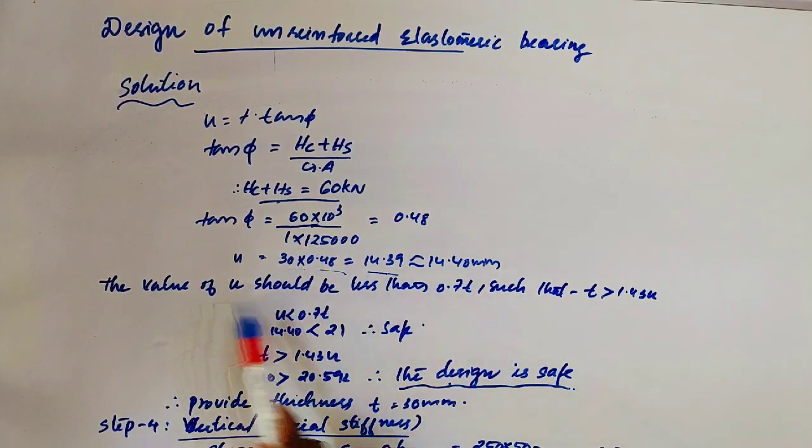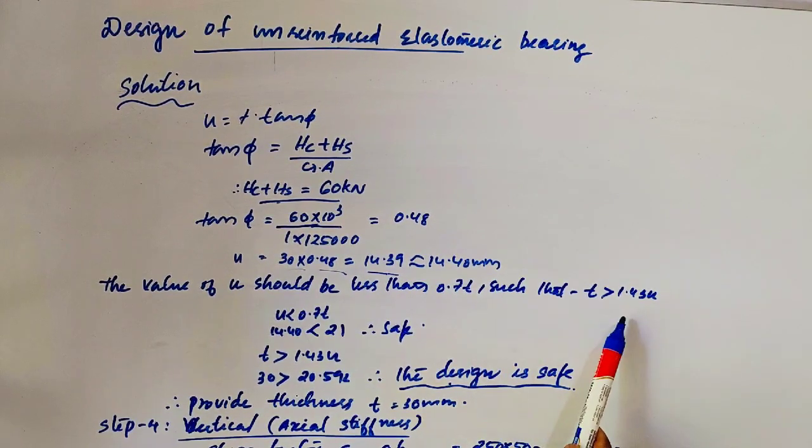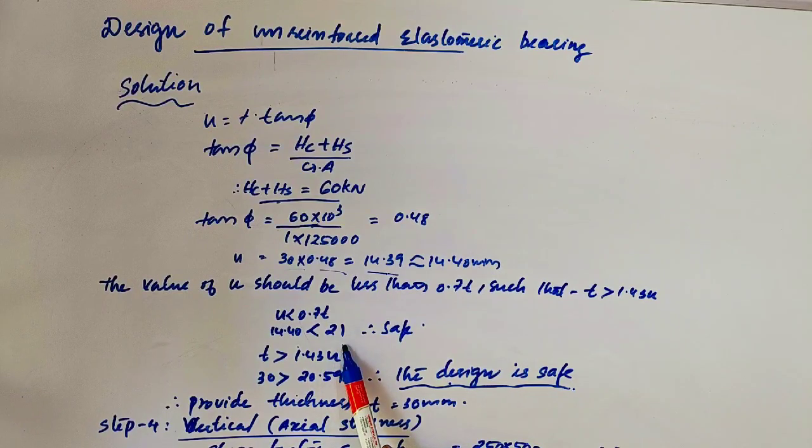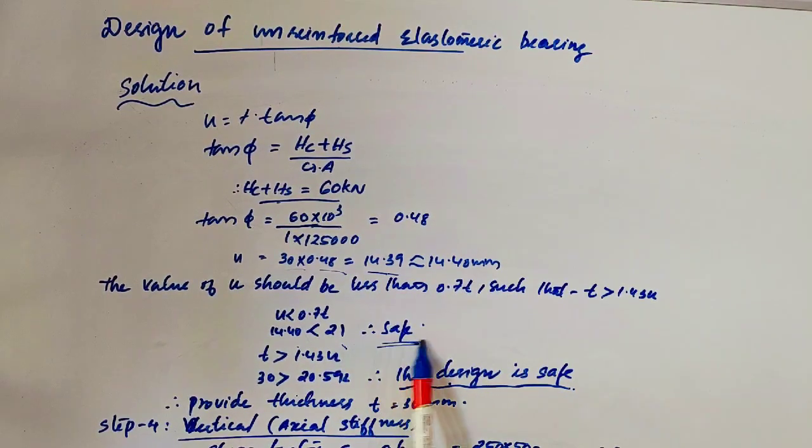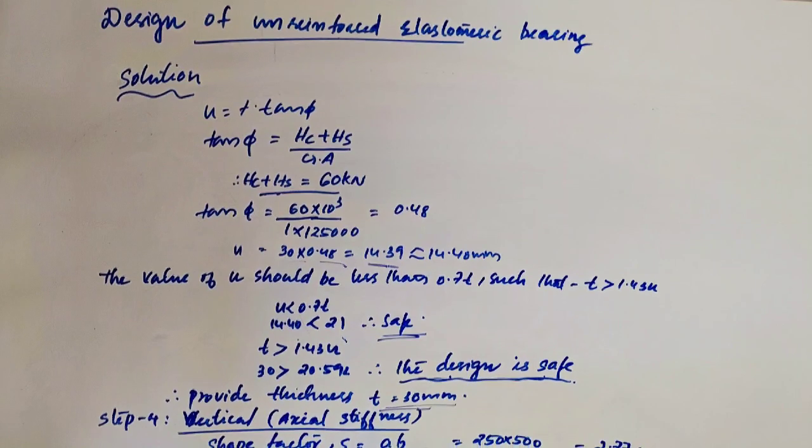Shear deformation, translational shear deformation. There is a condition: the value of U should be less than 0.7 T. Check U less than 0.7 T. U is 14.40, less than 0.7 into T, which is 21. Yes, safe. Then T greater than 1.43 U. 30 greater than 1.43 U, which is 20.59. Therefore the design is safe. Provide thickness T equal to 30 mm.